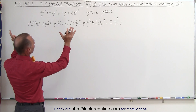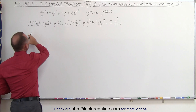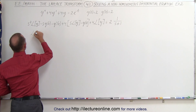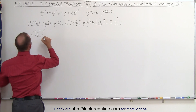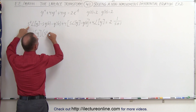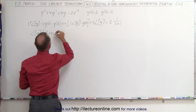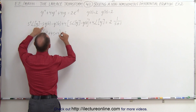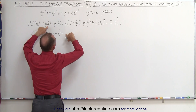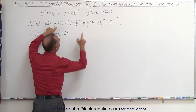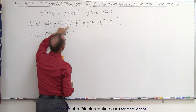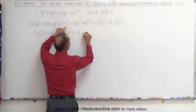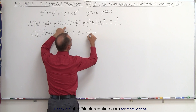Now that we've taken the Laplace transform of both sides, we want to factor out the Laplace transform of y with all the coefficients on the left side. We have s squared, plus 4s, plus 4. We also have minus s times y evaluated at zero, which is 2, giving us minus 2s. And here we have a minus 2, and a minus 2 multiplied times 4, which is minus 8. That equals 2 divided by s plus 1.